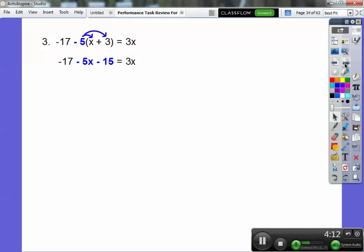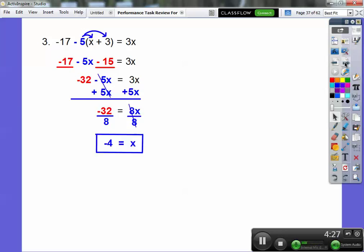On this one, distribute the negative 5 through. Be careful. Negative 5 times 3 is negative 15. Combine like terms: negative 17 and negative 15 gets us negative 32. Add 5x to both sides to get 8x, then divide by 8 to get x equals negative 4.